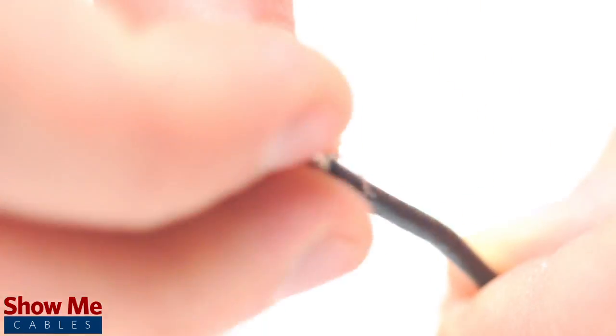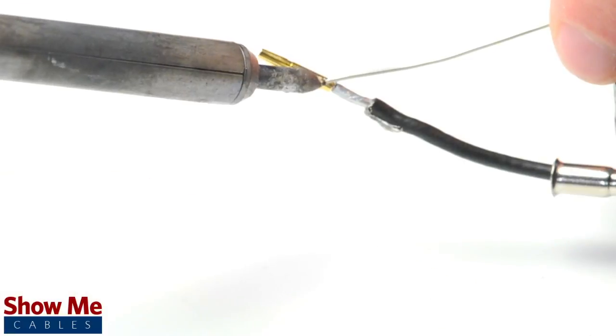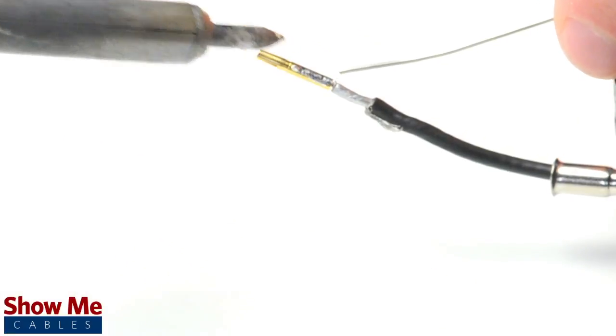Pull back the braided shield and insert the pin onto the center conductor. Solder the pin onto the center conductor and insert the connector housing over the cable.